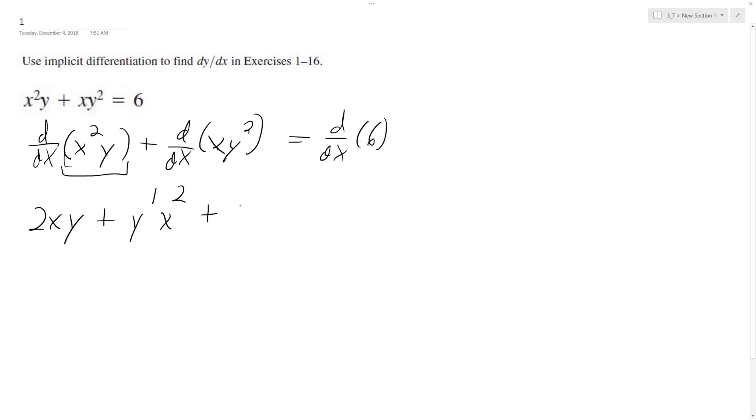Derivative of x is 1, so we get y squared plus x times 2y y prime. And then finally here, what we get is just 0.